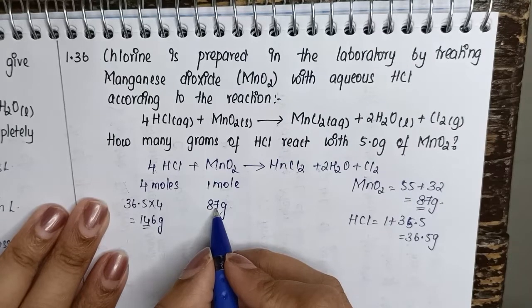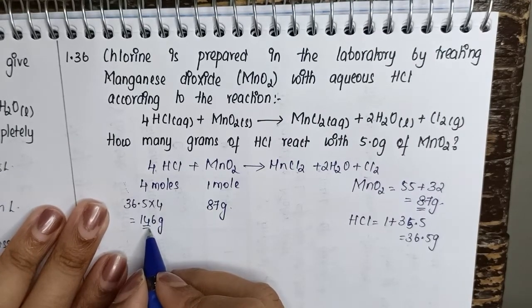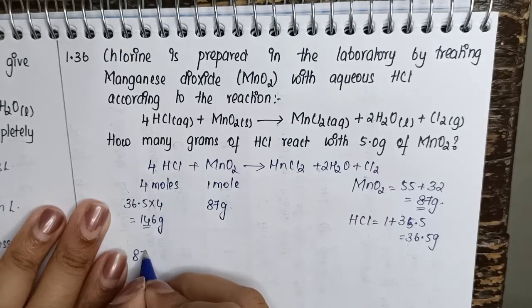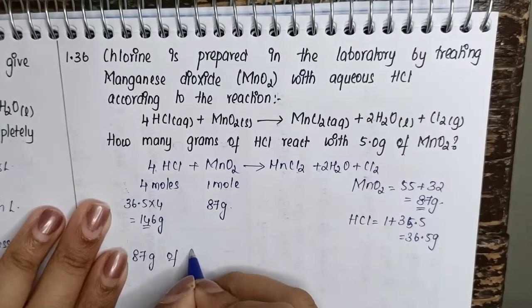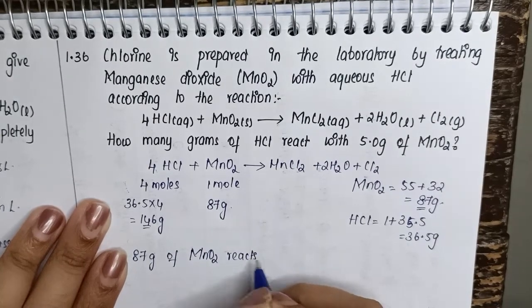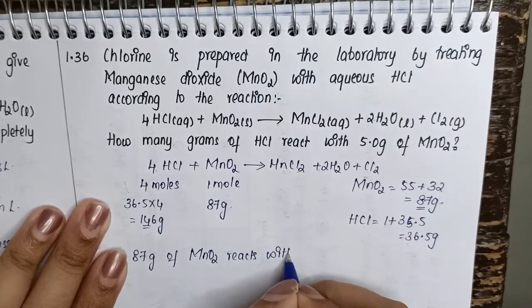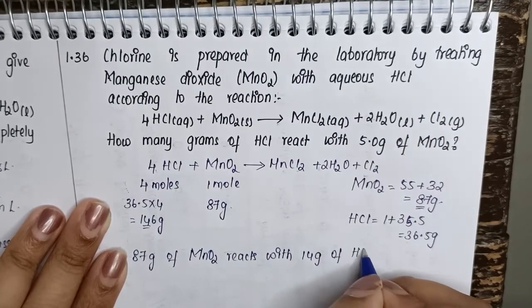So now we are going to use these values. So we can say 87 grams of MnO2 reacts with 146 grams of HCl.